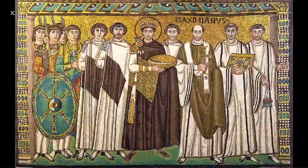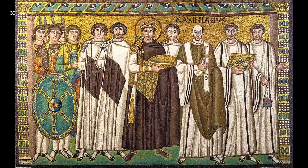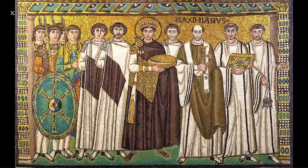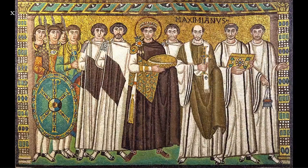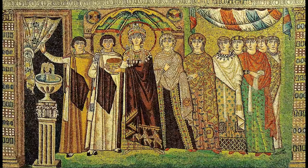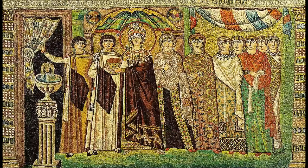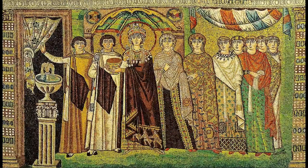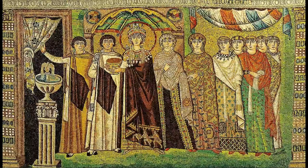Here you can see Christ seated in majesty, wearing the imperial robes. He's flanked by two angels with their wands of office, and Christ hands the imperial crown to the emperor on his right, and a model of the building to the bishop on his left. On one side of this apse mosaic, the emperor Justinian is flanked by his retinue, including Maximianus, the bishop of Ravenna — at this time the capital city of the Byzantine empire in Italy. His attendants carry the gospel book and a burning thurible, and he's holding the bowl for the bread of the Eucharist. On the left of the apse, we see the empress Theodora, dressed in imperial purple, accompanied by her attendants and clergy, carrying a golden chalice for the wine of the Eucharist.